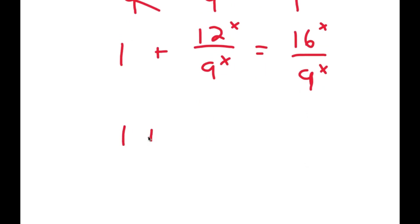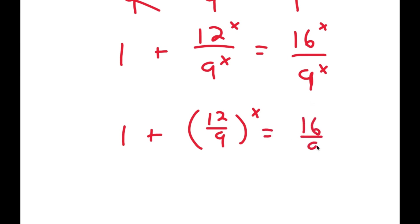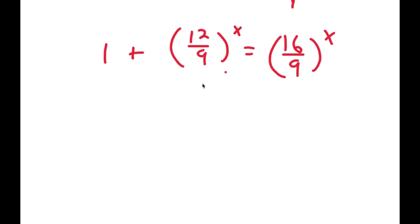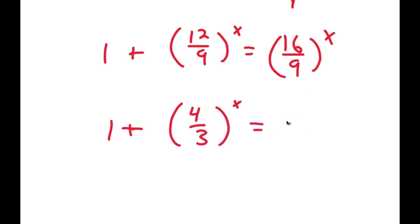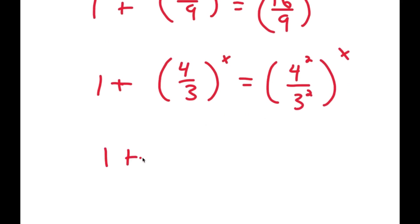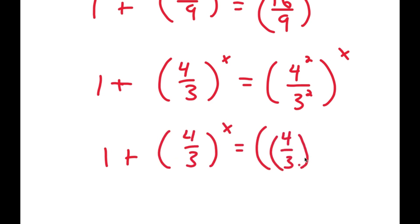From here I can rewrite this as 12 over 9 to the power of x, and 16 to the power of x over 9 to the power of x I can rewrite as 16 over 9 to the power of x. Now 12 over 9 simplifies to 4 over 3, and 16 over 9 simplifies to 4 squared over 3 squared.